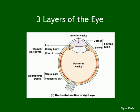The middle layer is the vascular tunic — vascular means it contains blood vessels, so it is responsible for providing nutrition and oxygen to the different parts of the eye. That is why it is in the middle, so it can feed the other parts. It consists of the choroid, the ciliary body, and the iris.